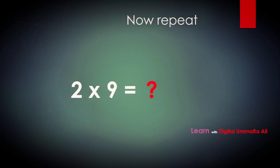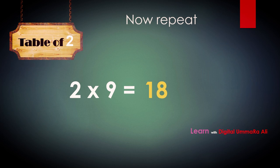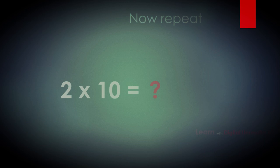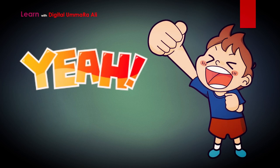Two nines are — yes — two nines are eighteen. Two tens are — this is so simple — two tens are twenty. Yes kids, now you already know the table of two. To repeat it again, please watch the video.